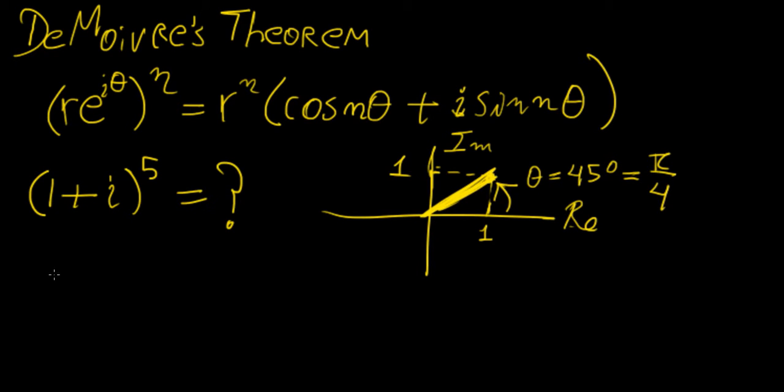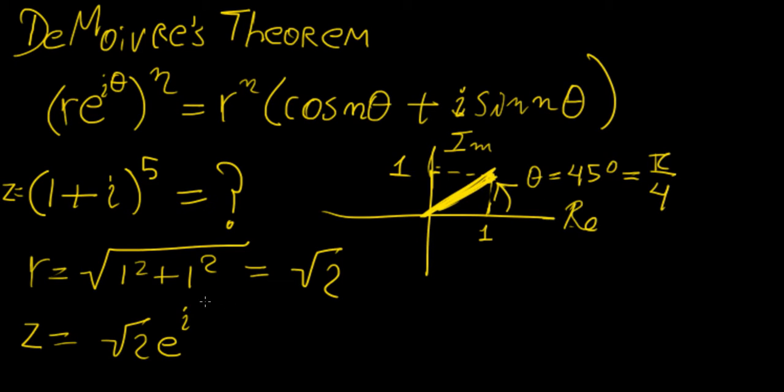That means if we want to express this in polar form, we need to find the magnitude. The magnitude is going to be square root of 1 squared plus 1 squared, so that's square root of 2. Now we're going to express this as z equals square root of 2 times e to the power of i times pi over 4.